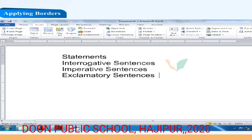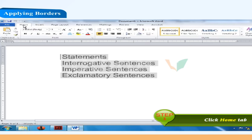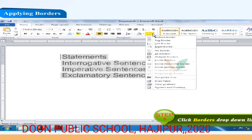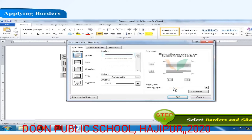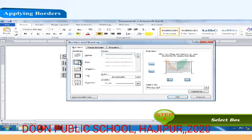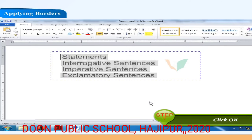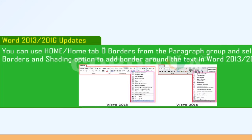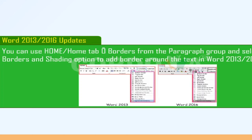Applying borders: you can apply different types of borders to your text — this option places lines around the text. To add a border around the text, follow these steps. Step 1: Select the text. Step 2: Click the Home tab. Step 3: Click the drop-down list arrow on Borders from the paragraph group. Step 4: Select the Borders and Shading option — the Borders and Shading dialog box appears. Step 5: Select Box from the Settings section. Step 6: Choose the style, color and width of the border. Step 7: Click OK. In Word 2013 or 2016, use Home tab, then Borders from the paragraph group and select Borders and Shading.